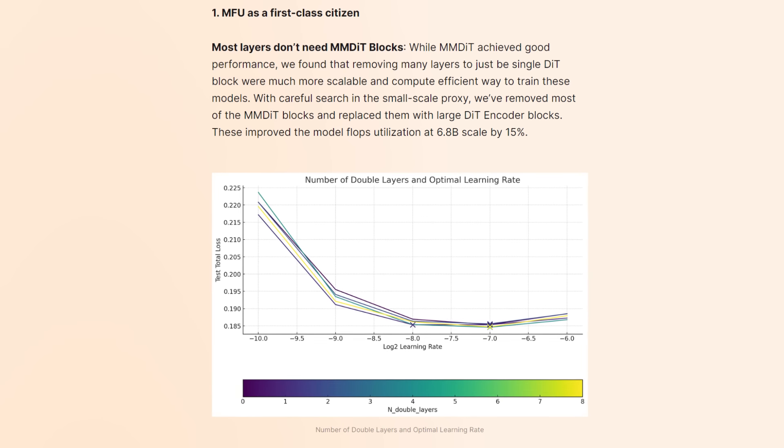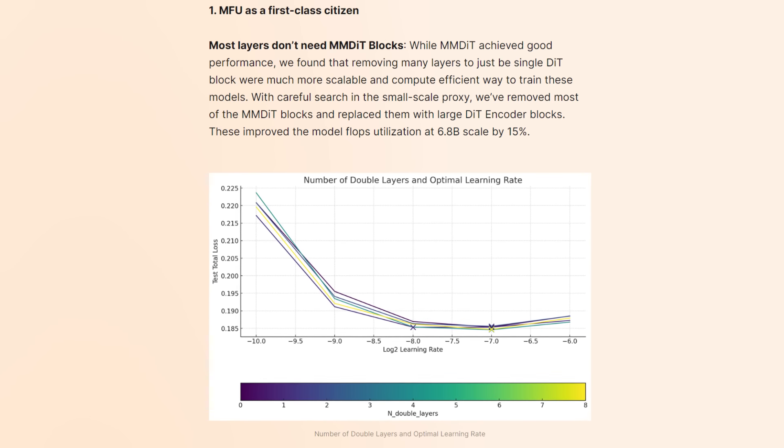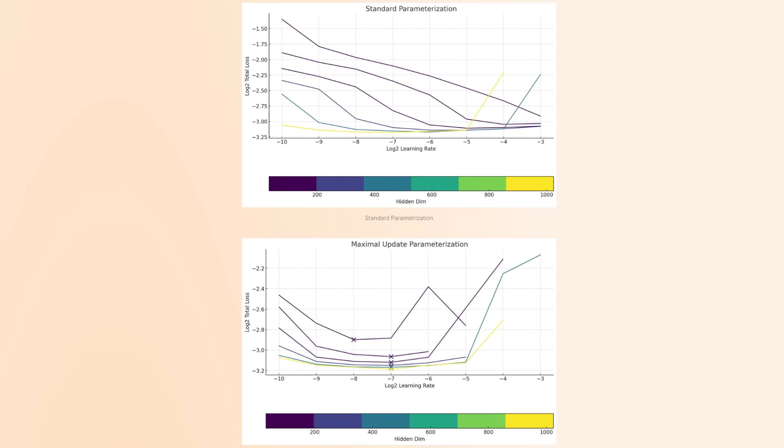Simo and Fal.ai's collaboration led to a few improvements. Number one, efficient layer design — they were able to reduce unnecessary layers or filters so that image generation happens quite a bit faster. They were also able to optimize the training and increase zero-shot learning, meaning the model was able to learn more without extensive tuning. They also recaptured the entire dataset for better outputs and redid some of the architecture to optimize it.